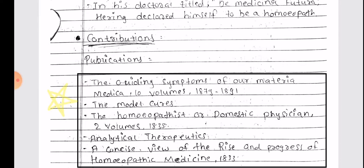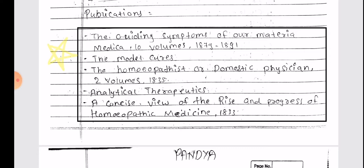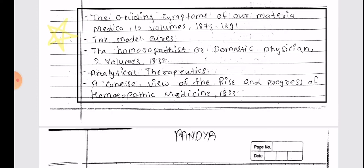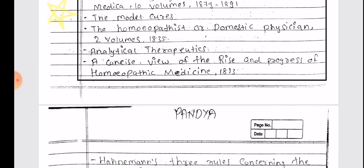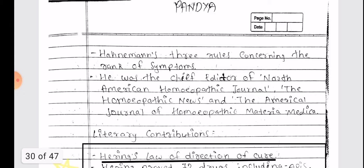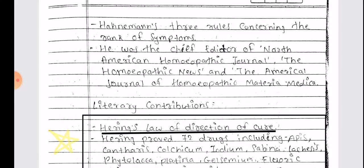Contributions and Publications: The Guiding Symptoms of Materia Medica, 10 volumes (1879–91); The Model Cures; The Homeopathic Domestic Physician, 2 volumes (1835); Analytical Therapeutics; A Concise View of the Rise and Progress of Homeopathic Medicine (1833); Hahnemann's Three Rules Concerning the Rank of Symptoms. He was Chief Editor of the North American Homeopathic Journal, The Homeopathic News, and the New American Journal of Homeopathic Materia Medica.